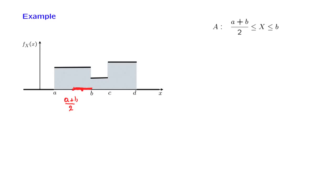What is the conditional PDF? The conditional PDF is going to be 0 outside the interval on which we are conditioning. So the conditional PDF is 0 in this range, and also it is 0 in this range.